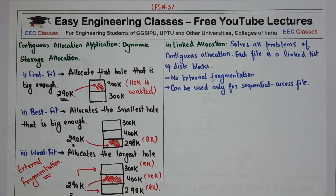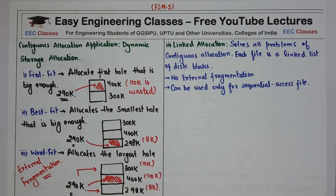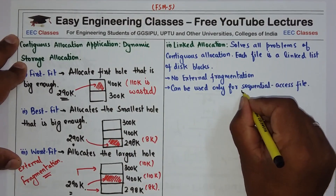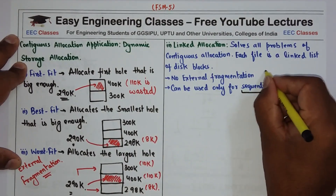Next we have linked allocation. Linked allocation solves all the problems of contiguous allocation. In this, each file is a linked list of disk blocks, so it is not necessary to have contiguous addresses — we can have scattered blocks where each block is linked to the next. There is no external fragmentation, but the disadvantage is it can only be used for sequential access of files. This is the biggest disadvantage of linked allocation.